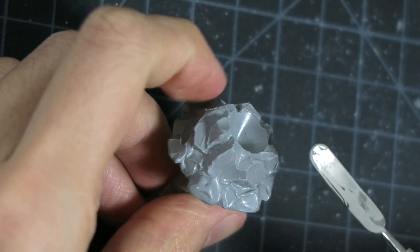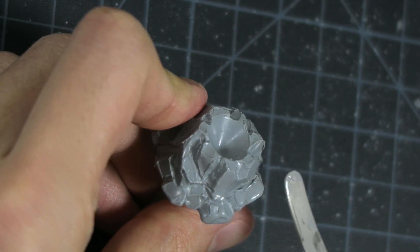It has a spatula type head which I use to quickly texture the piece and give it a rocky effect.